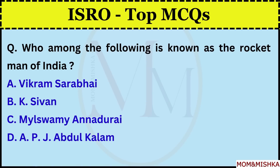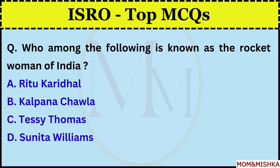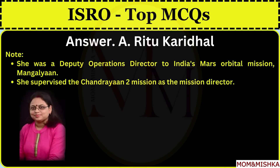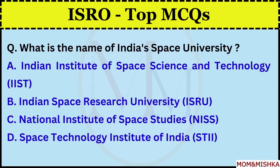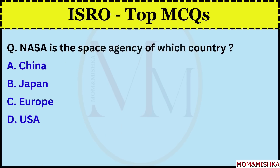Who among the following is known as the Rocket Man of India? K. Sivan, option B. He served as Secretary of the Department of Space and Chairman of ISRO and the Space Commission. He also served as Director of the Vikram Sarabhai Space Centre and the Liquid Propulsion Systems Centre, and was awarded the Dr. APJ Abdul Kalam Award in 2019. Who among the following is known as the Rocket Woman of India? Ritu Karidhal, option A. She was the Deputy Operations Director of India's Mars Orbital Mission Mangalyaan and supervised the Chandrayaan 2 mission as Mission Director. What is the name of India's Space University? Indian Institute of Space Science and Technology (IIST), option A, established in 2007 by ISRO in Thiruvananthapuram, Kerala.